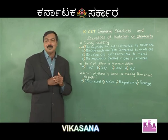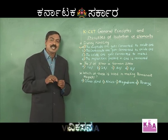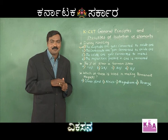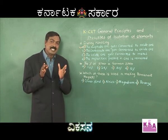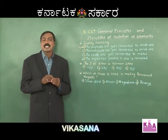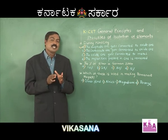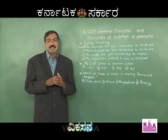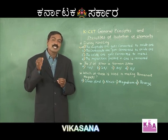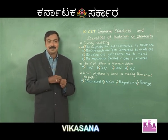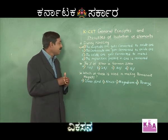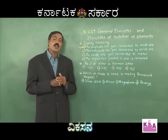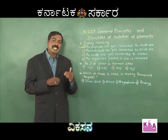Then what is German silver? German silver is an alloy of copper. For entrance examination preparation, note the alloys of copper: brass is an alloy of copper and zinc; bronze is an alloy of copper, zinc, and tin; and similarly, German silver is an alloy of copper, zinc, and nickel.